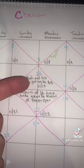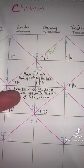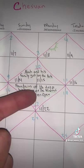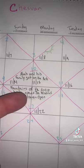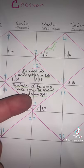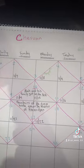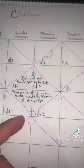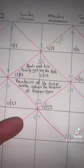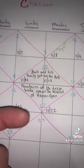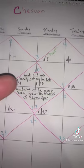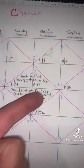And then the day that the fountains of the deep broke open and the windows of heaven opened — so the fountains of the deep break open and the windows of heaven break open — that is November 21st and the 22nd, evening to evening.